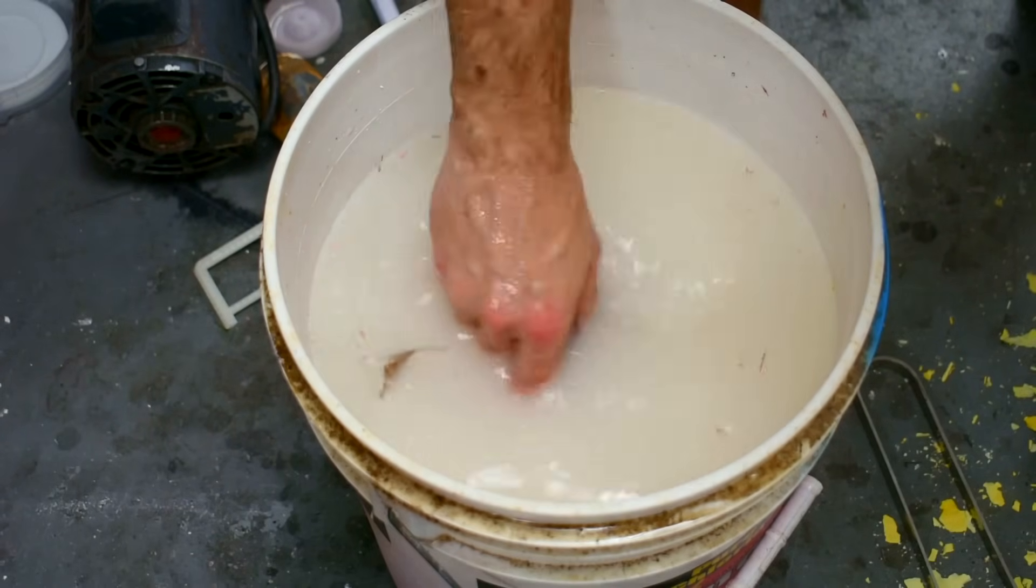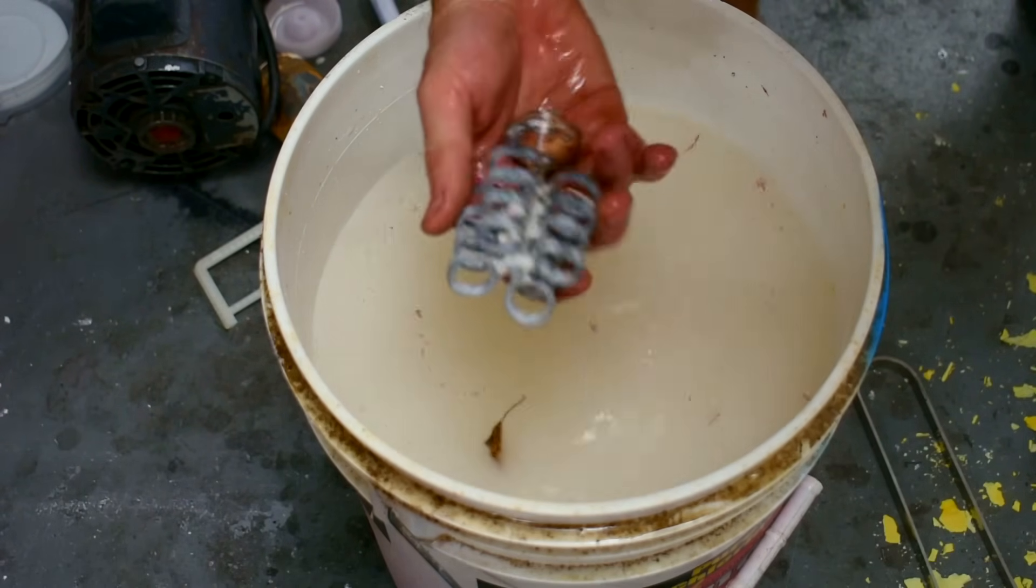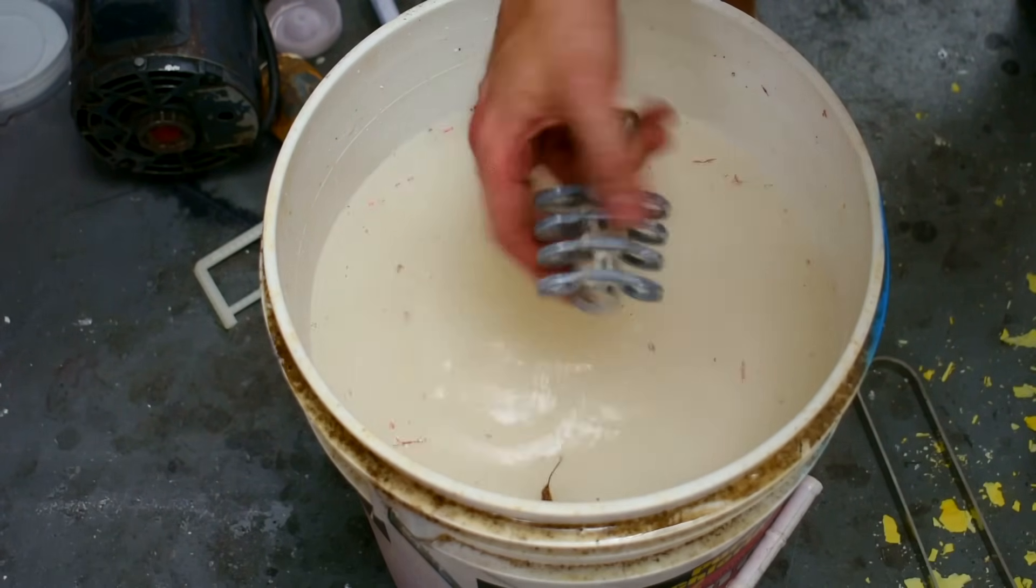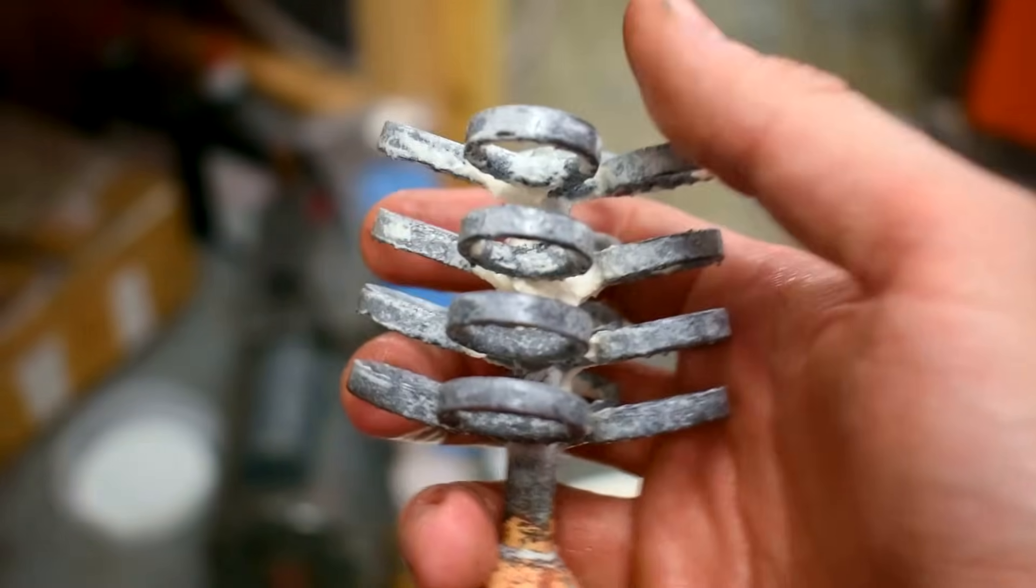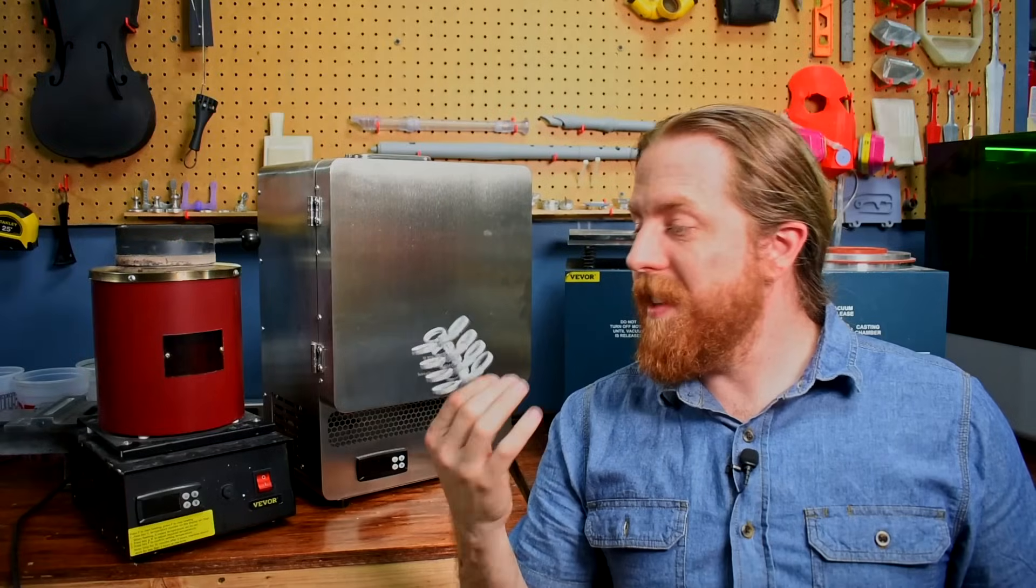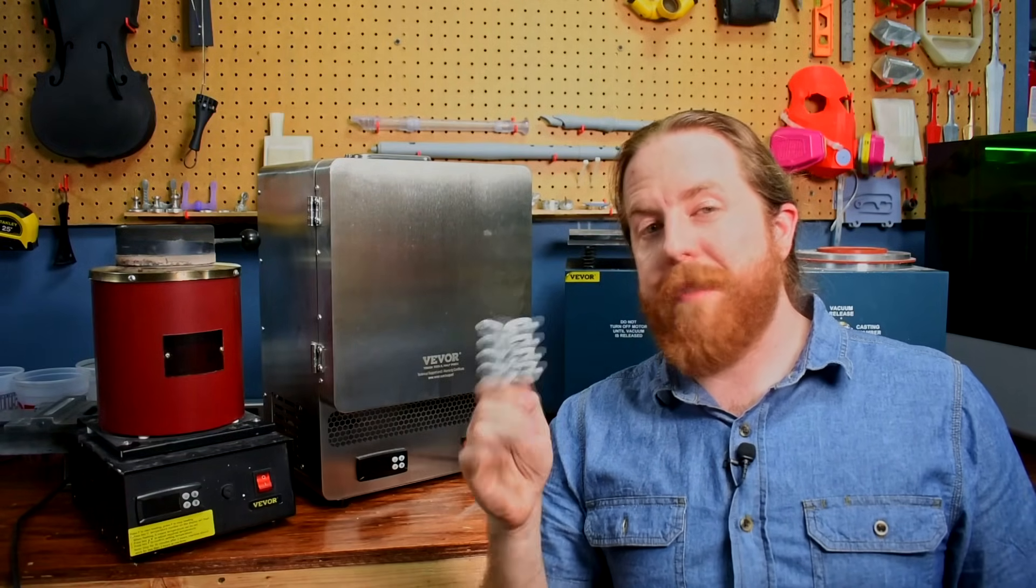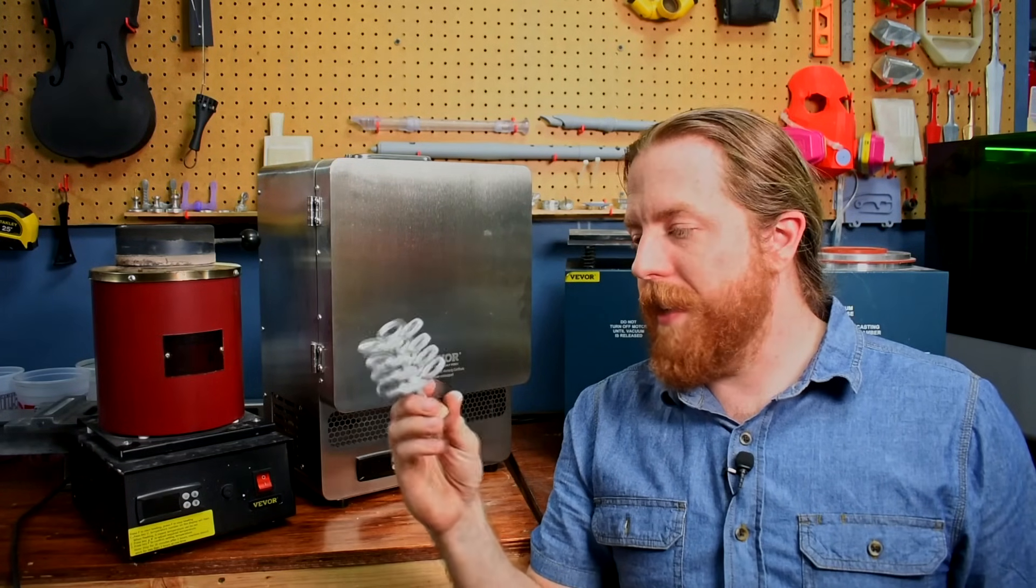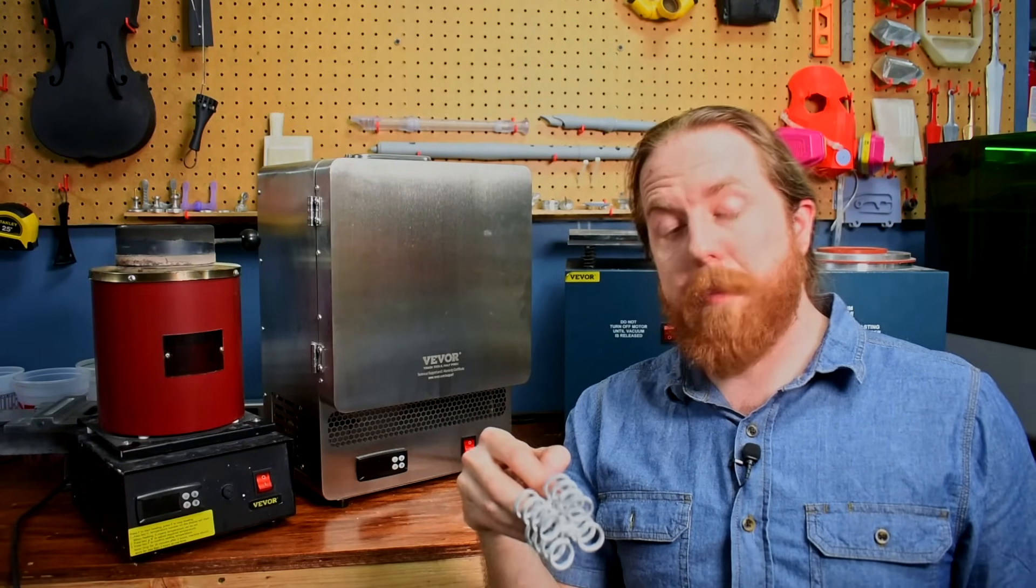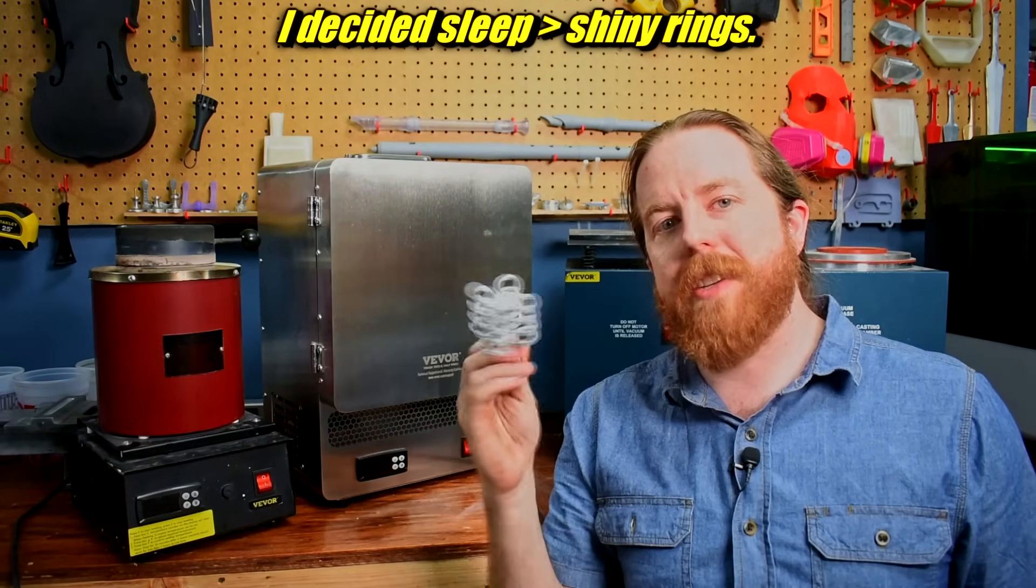And anyways, the casting looks pretty good. It clearly burned out all the resin because the metal filled in all the holes. This is just made in bronze, ancient bronze. It's 90% copper, 10% tin. And if you want to see how these rings turn out, you'll probably have to tune into a future video where I talk about the resin. Production schedules and real life events being what they are, I didn't have time to get these finished in time for this video.